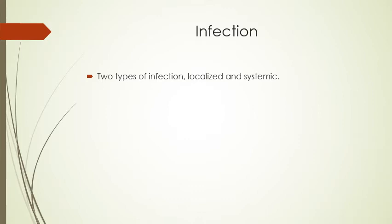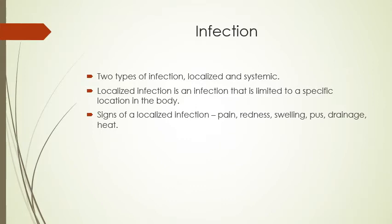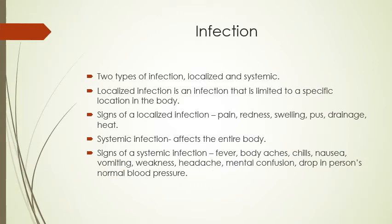There are two types of infection: localized and systemic. A localized infection is limited to a specific location — for example, a cut on your knee that becomes infected, showing signs like pain, redness, swelling, pus or drainage, and warmth to the touch. A systemic infection is very different — it affects the entire body, multiple organ systems. Going septic or being in sepsis is an example. Signs and symptoms include fever, body aches, chills, nausea, vomiting, weakness, headache, mental confusion, and dropping blood pressure.